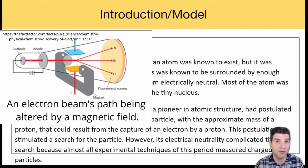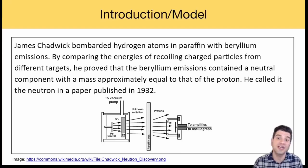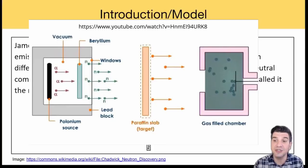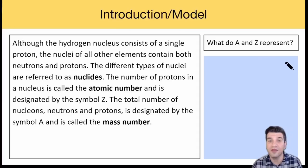This postulation stimulated his search for the particle. However, its electrical neutrality complicated the search because almost all experimental techniques of this period measured charged particles. James Chadwick bombarded hydrogen atoms in paraffin with beryllium emissions. By comparing the energies of recoiling charged particles from different targets, he proved that the beryllium emissions contain a neutral component with a mass approximately equal to that of a proton. He called it the neutron in a paper published in 1932.